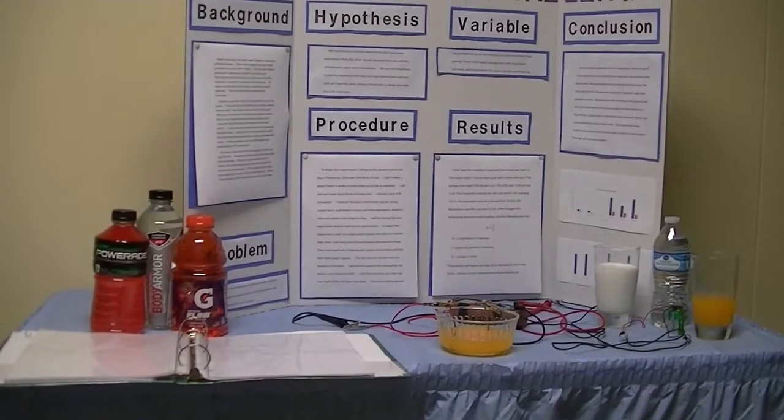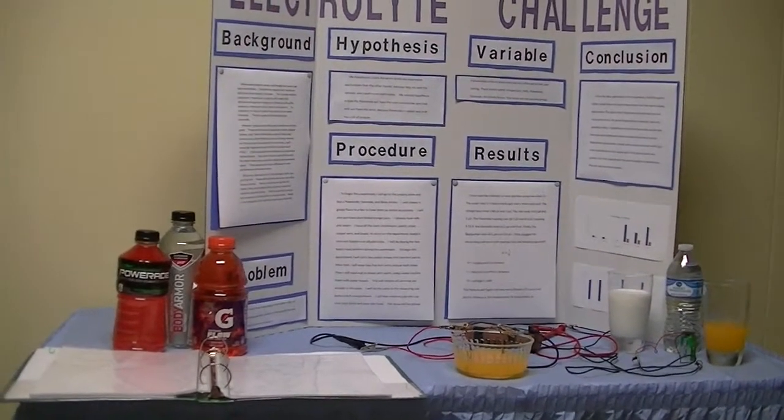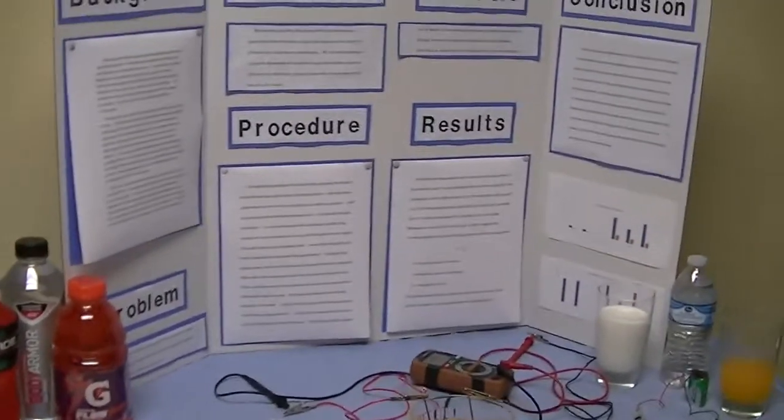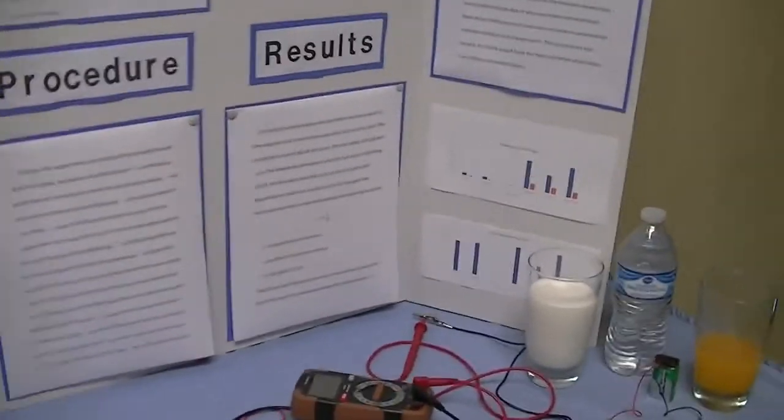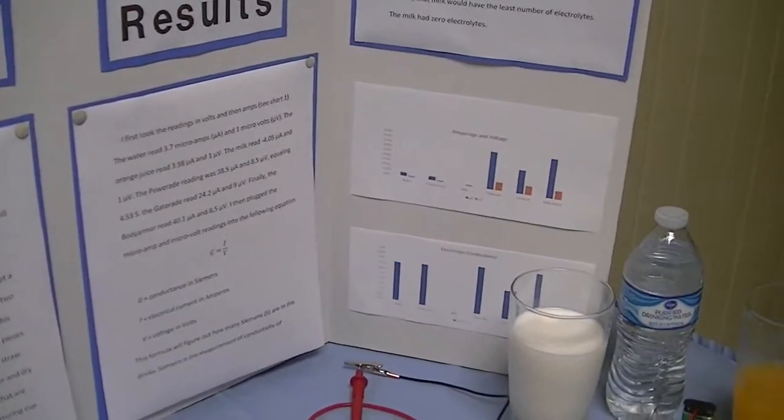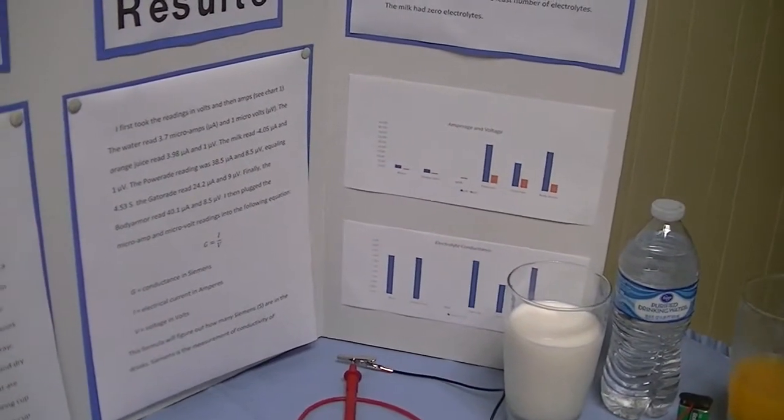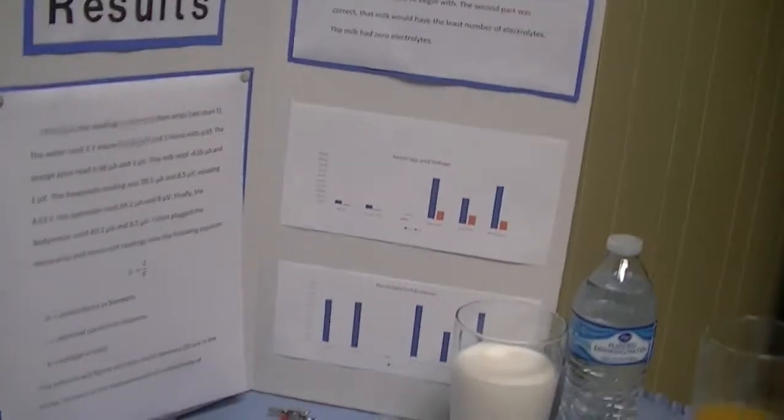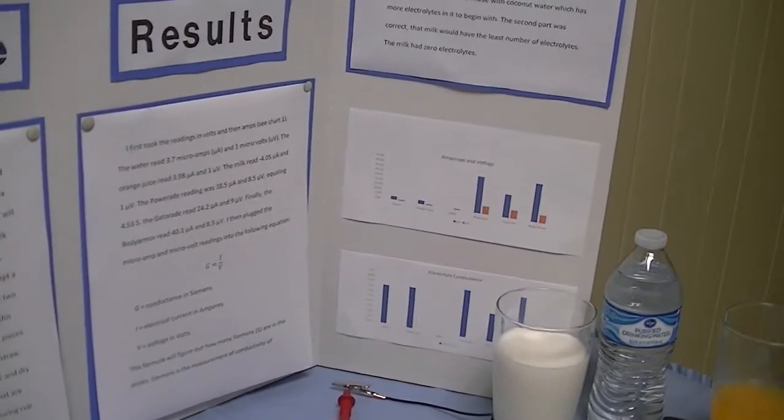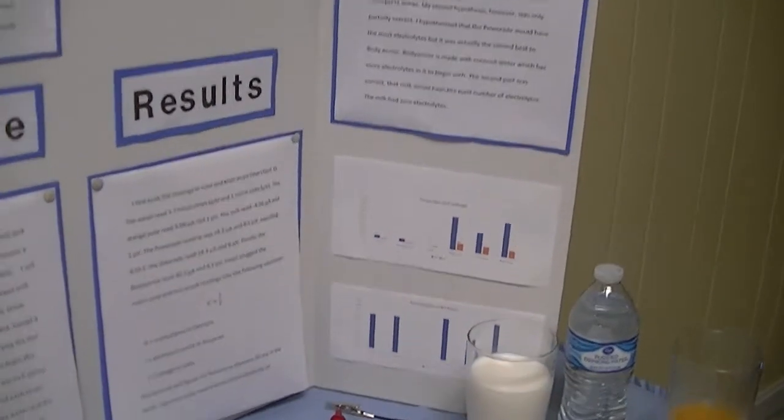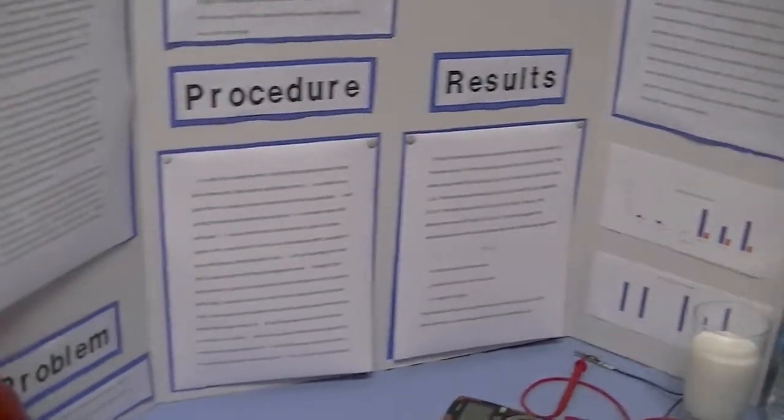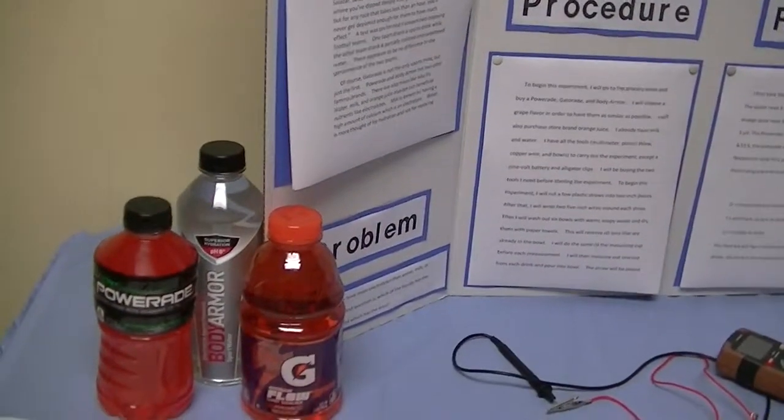After plugging them into the formula, I got my final results. The water read 3.7 Siemens. The orange juice read 3.98 Siemens. The milk came out with a negative amount of Siemens. In actuality, the milk would have a zero reading instead of a negative reading, because it cannot physically take the electrolytes out of your body. The sports drinks then were tested next. The Powerade equaled 4.53 Siemens. The Gatorade 2.69 Siemens. And finally, the body armor at 4.72 Siemens.